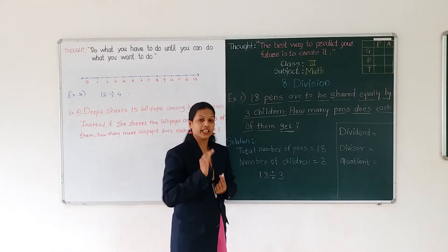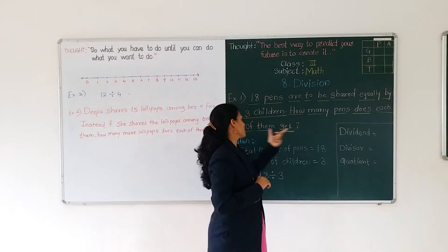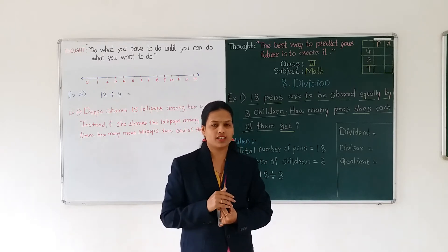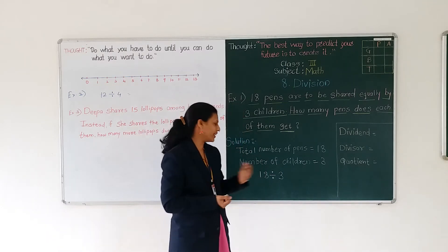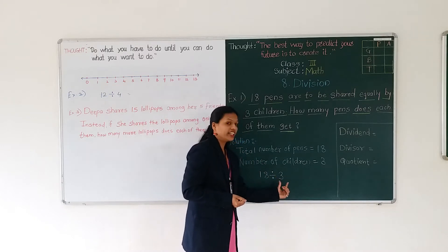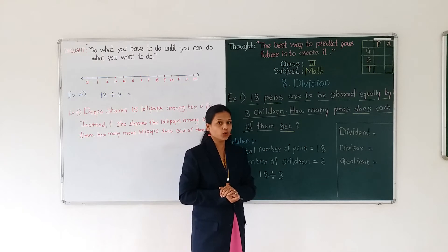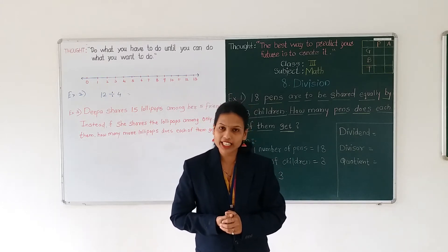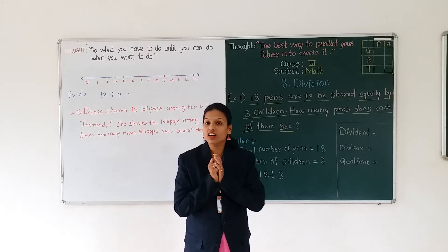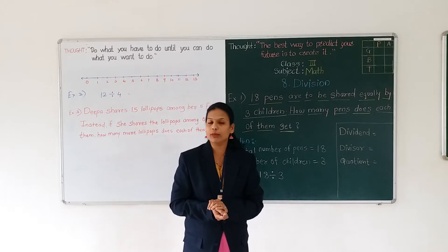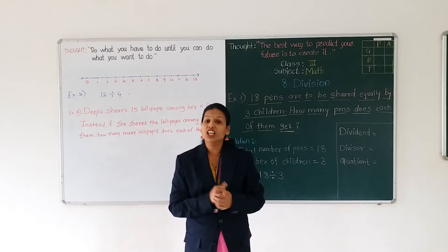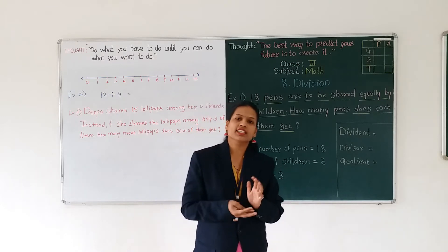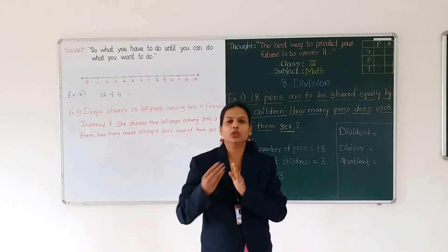We have to find out the number of fans for each child. Our divisor is number 3. For division, we have to know the multiplication tables. My dear students, as I told you, learn or recite the multiplication table daily. Because if you don't know the multiplication table, you cannot solve a division problem. So start from today — recite tables at least 1 to 10 first, and 10 to 20 on the second day.